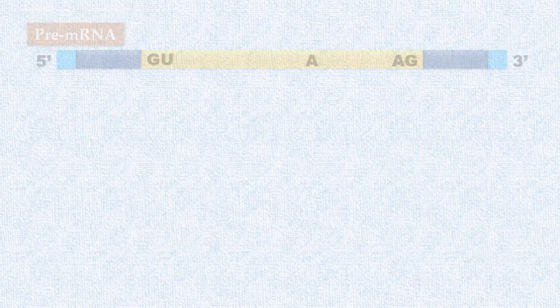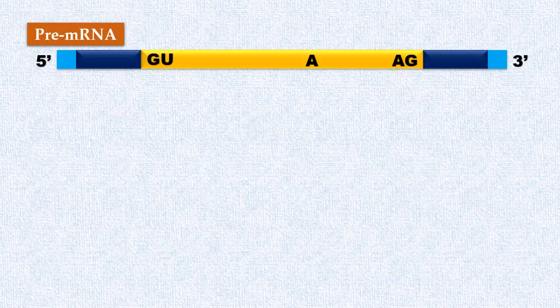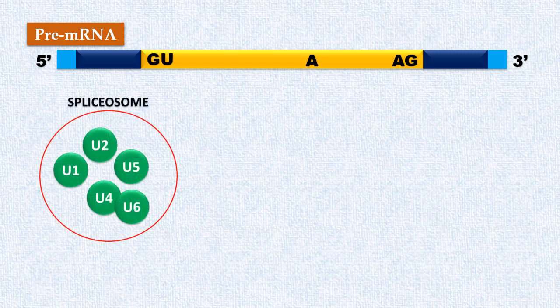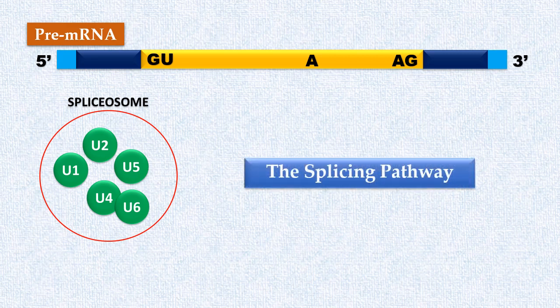So now we are familiar with the splice sites in introns of pre-mRNA and the spliceosome. Let's understand the steps involved in the splicing pathway.